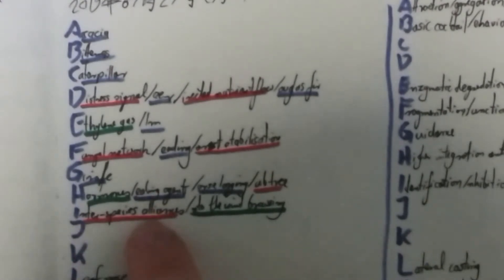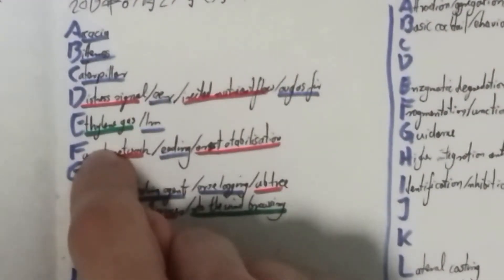And we have interspecies alliance because the fungus and the trees via the fungal network, they enter an alliance. That means basically, actually the fungus gets something. They also get nutrients from the trees, but the trees also get something because they can send nutrients to other trees.